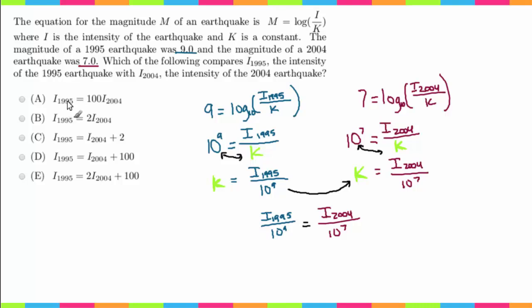So in order to do that, I need to multiply both sides by this denominator, by 10 to the 9th. So that's going to give me I of 1995 is equal to 10 to the 9th times I 2004 over 10 to the 7th.